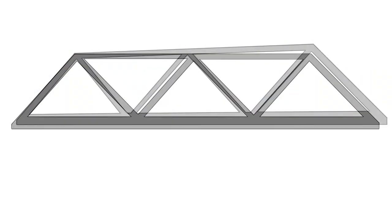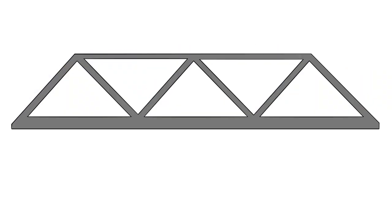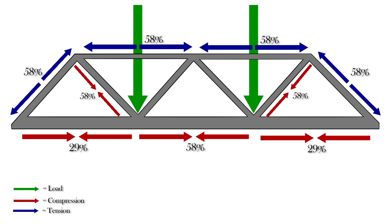Each segment of the truss experiences different loads of either tension or compression. We apply two equal loads to the deck and calculate the loads in each segment, which are shown as percentages of the total load. You can see that the largest loads are on the end and top segments, while the middle segments have none.